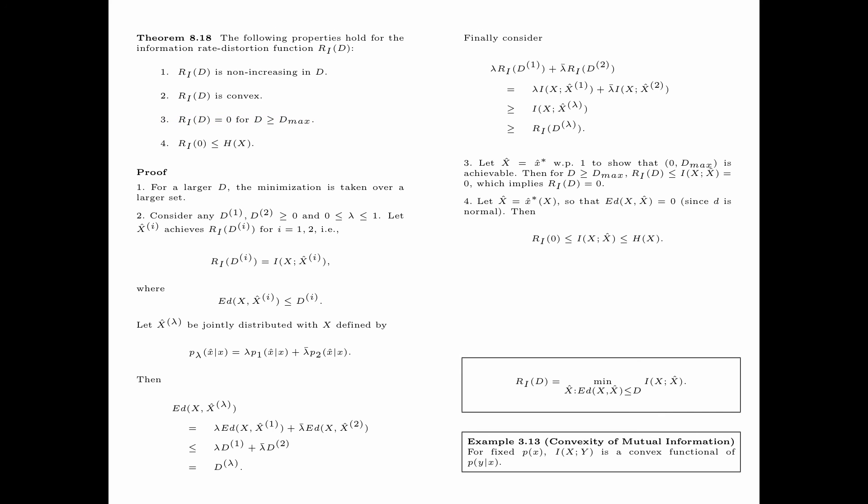To prove property 4, let x-hat be x-hat*(x), the reconstruction symbol that makes the distortion equal to 0. This is possible because the distortion measure d is normal. For this choice, the expected distortion between x and x-hat equals 0. Then R_I(0) by definition is less than or equal to I(x; x-hat), which is less than or equal to the entropy of x, since mutual information is always less than or equal to the entropy of x. This proves property 4.